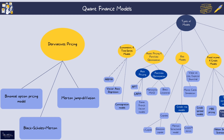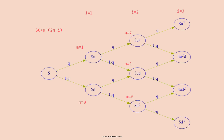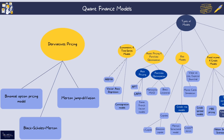Starting with the Binomial Option Pricing Model — this is a discrete time model that evaluates options by simulating possible price paths of the underlying asset over time. It constructs a binomial tree to represent different possible paths the asset price can take, allowing for valuation of American options which can be exercised before expiration.